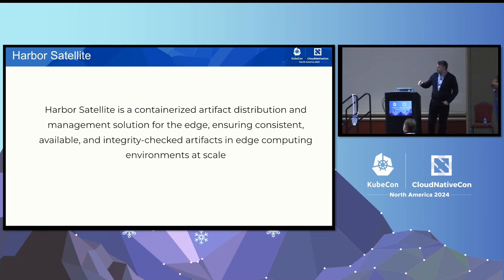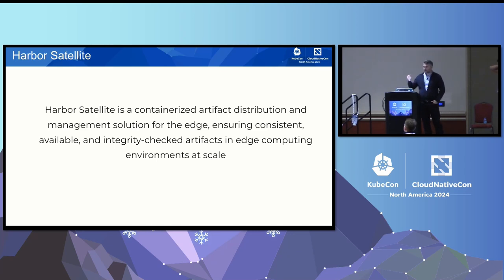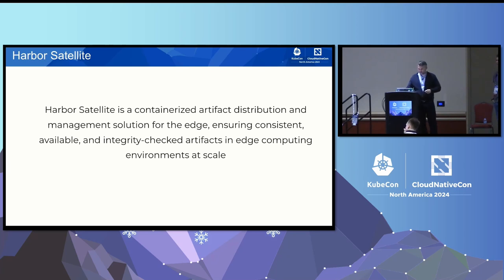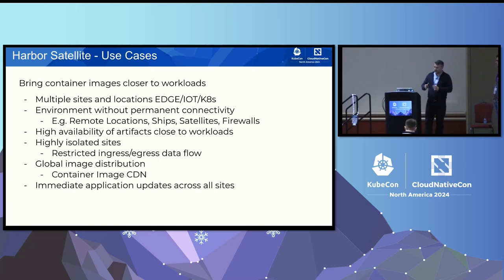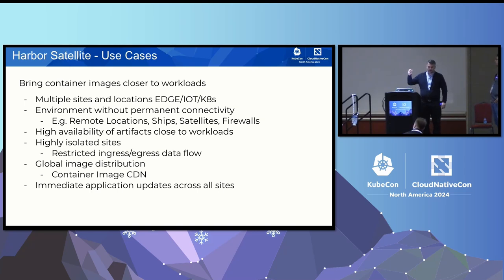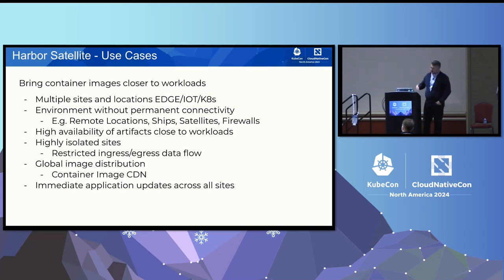Then we have another project in the Harbor ecosystem called Harbor Satellite. Harbor Satellite is a containerized artifact distribution solution — basically a registry at the edge, designed to manage hundreds and thousands of edge locations, distributing your software to those locations from a central Harbor instance. The typical use cases we see are edge, IoT — it's very small and can run on a small device — but you can also run it on a Kubernetes cluster. If you have a fleet of Kubernetes clusters and want to manage your artifact distribution to those clusters centrally from Harbor, you can use Satellite to do so.